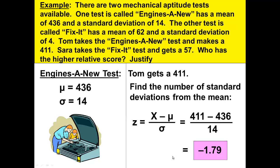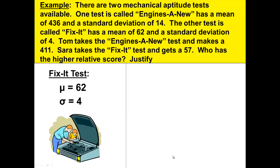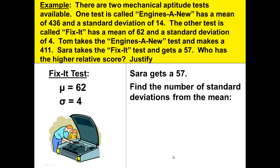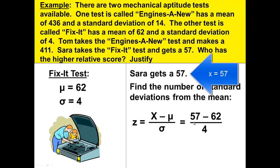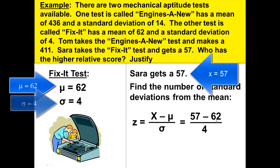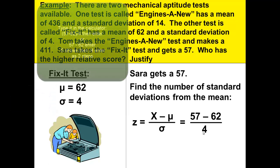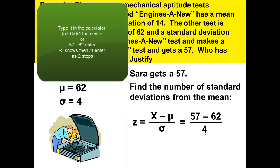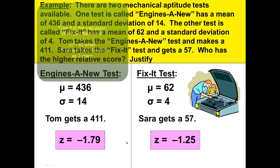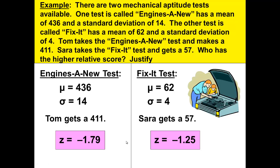Now let's look at Sarah's test — she got a 57. We find the number of standard deviations from the mean using the formula: 57 minus the mean of 62, divided by the standard deviation of 4. 57 minus 62 gives me negative 5, and negative 5 divided by 4 gives me negative 1.25. Again, it is below the mean. So we now have their two z-scores.